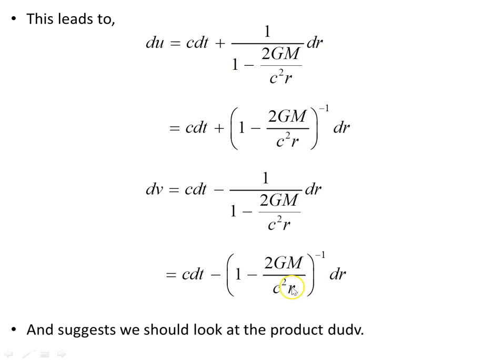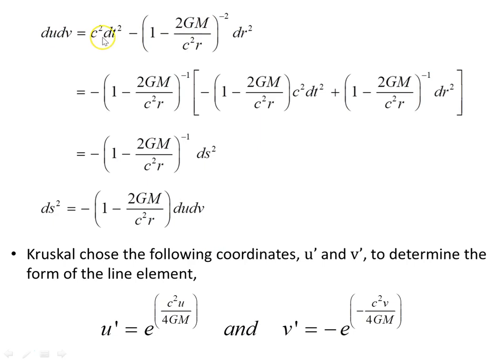Looking at these differentials — one with a minus and one with a plus — in developing a new set of coordinates that removes the discontinuities, we consider the product du·dv. This begins to look like the Schwarzschild line element, at least for the time and radial components, with the angular part suppressed.